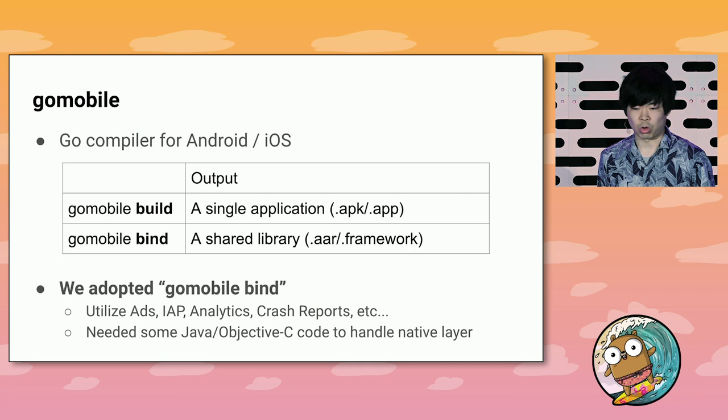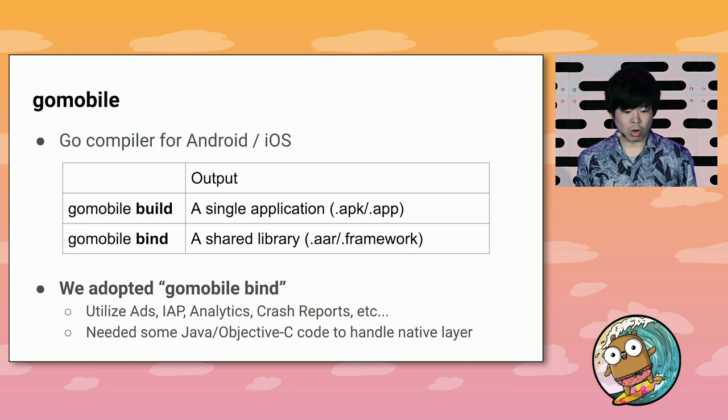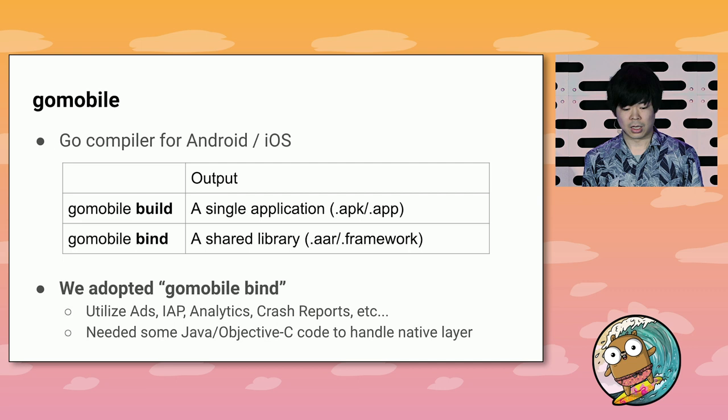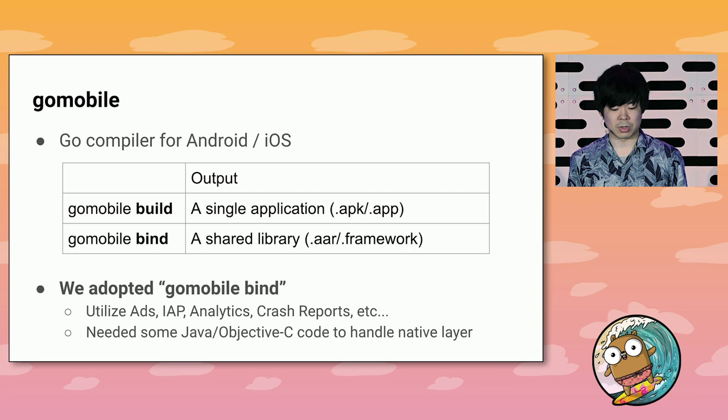Let me explain how we made it. We utilized Go Mobile. Go Mobile is a Go compiler for Android and iOS. Go Mobile has two modes: Go Mobile Build, which outputs a single application like APK and APP, and Go Mobile Bind, which outputs a shared library. Go Mobile Build is much easier to use, but we used Go Mobile Bind because we needed to utilize advertisements, in-app purchases, analytics, and other native APIs. So we needed some Java or Objective-C code to handle the native layers.